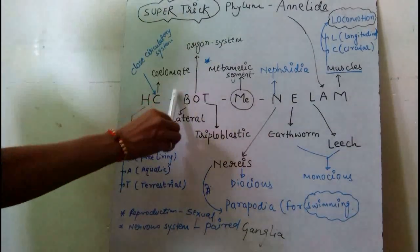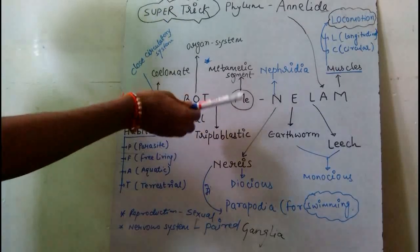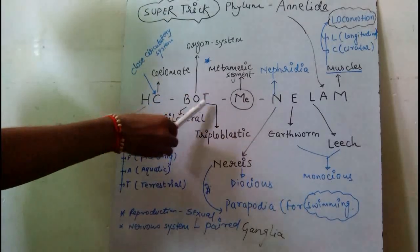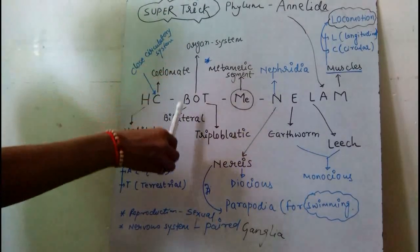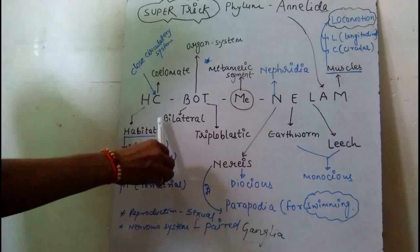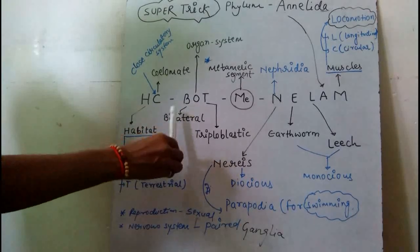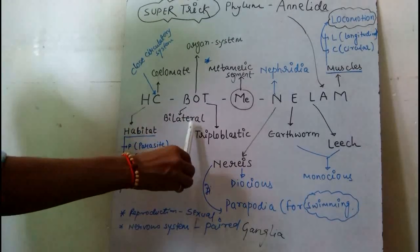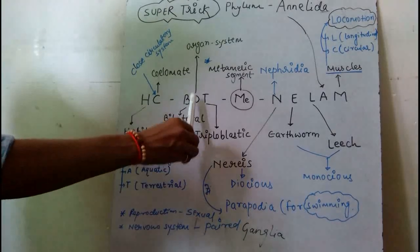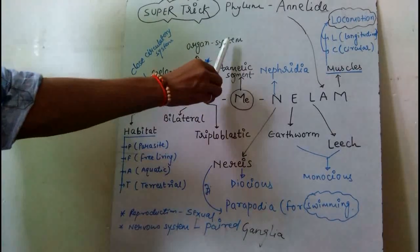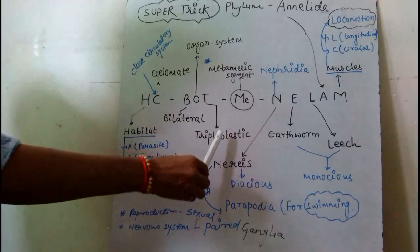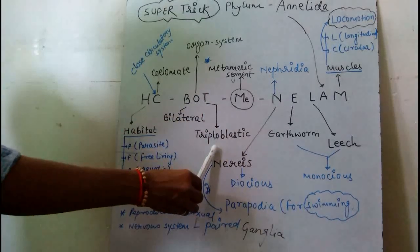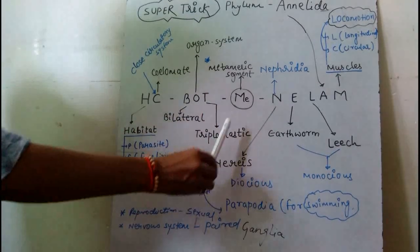BOAT — I have already explained this in some videos. B stands for bilateral symmetry. O stands for organ system and body coelomization. T stands for triploblastic. Remember it!